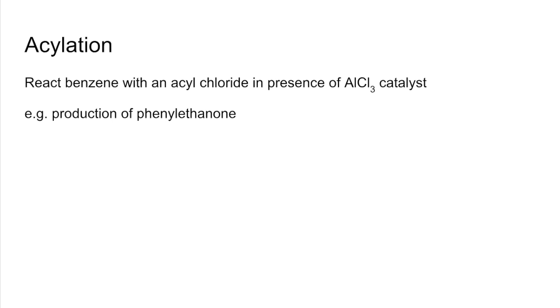So we'll quickly look at acylation now. So that's where you react your benzene with an acyl chloride, again in the presence of that AlCl₃ catalyst. So this time I'm going to produce phenylethanone. So there's the overall reaction. So we've got ethanoyl chloride reacting with benzene in the presence of AlCl₃. And there's that product, phenylethanone and HCl.